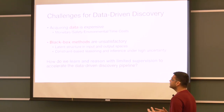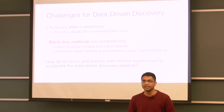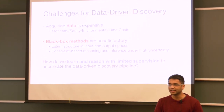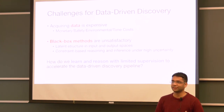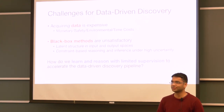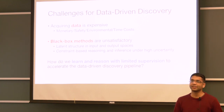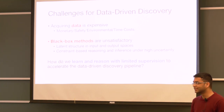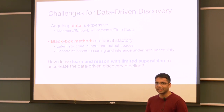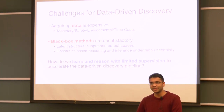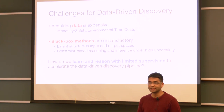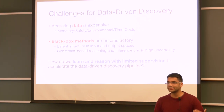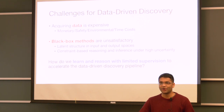It turns out that with a lot of the data we collect, the black box methods that we have available to us might not work out of the box. For natural images, for instance, we might have neural networks which work really well. But if you think about a lot of different scientific applications, trying to apply a black box method that's designed for another domain might not work for this particular domain. So the broader question I try to answer in my research is how do we learn and reason with limited supervision to accelerate this pipeline going from data to models to decisions.